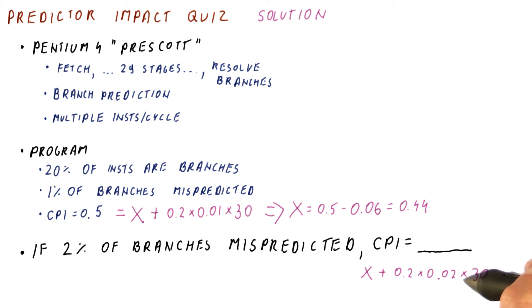which multiplies out to 0.12, for an overall CPI now of 0.56.